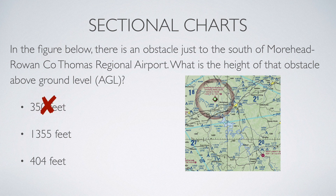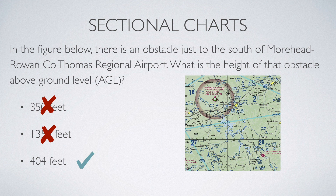It's not 350 feet — there is an obstacle just to the north of the airport that is 350 feet above ground level. It's also not 1,355 feet, because the 1,355 next to the obstacle to the south indicates the peak of that obstacle is at 1,355 feet mean sea level. The 404 in parentheses just below 1,355 indicates it is 404 feet above ground level.